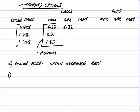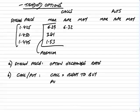The next question is: what do call and put mean? You should remember from an earlier chapter, when we were talking about share options and real options, a call is the right to buy, and a put is the right to sell. But importantly, of course, is what are we buying or selling? It's the right to buy or sell what we call the contract currency.